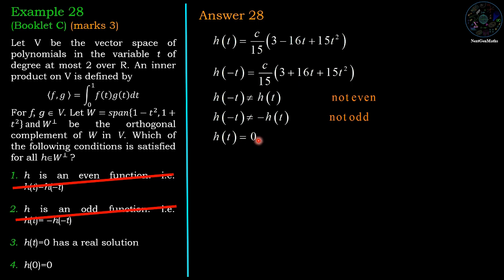Now h(t) equals 0, but c is not 0 for all the polynomials, so this bracket is 0. Then we have 3 minus 16t plus 15t squared equal to 0.